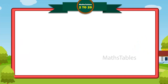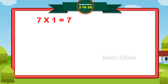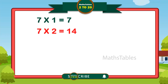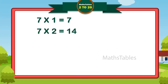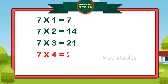7 ones are 7. 7 twos are 14. 7 threes are 21. 7 fours are 28. 7 fives are 35.